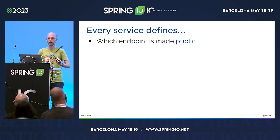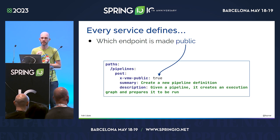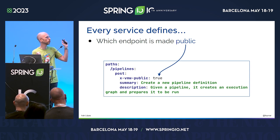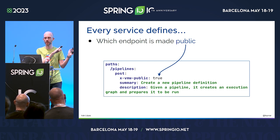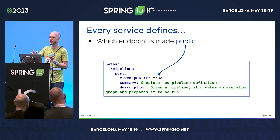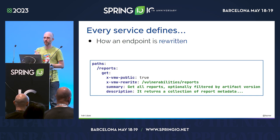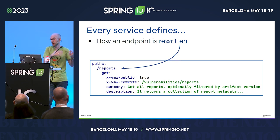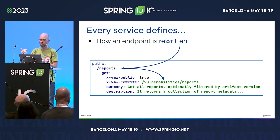This is the solution I created. Every service owner can make an endpoint public by adding just one extension to their OpenAPI. I created the extension x-BMW-public — if you add that extension to an endpoint, the gateway knows it's going to be made public. That's it — you deploy a new version with this extension and the endpoint is automatically made public. Optionally, you can rewrite the path when you expose it. With the x-BMW-rewrite extension, you can expose /reports from the vulnerability service at a completely different path that makes more sense for clients.